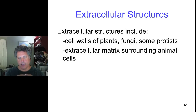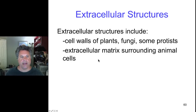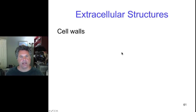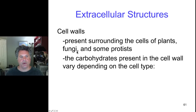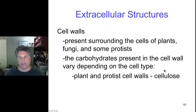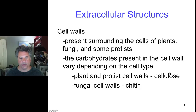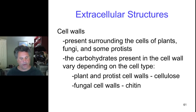Epithelium is a row of cells that are tightly linked and form a barrier usually — your gut epithelium is an example, and epithelia have extensive extracellular matrices. Cell walls are found in fungi, plants, and protists, and the type of carbohydrate present depends on the organism. Plant and protist cell walls use cellulose, which is a polymer of beta glucose. Fungal cell walls have a modified sugar polymerized into chitin.